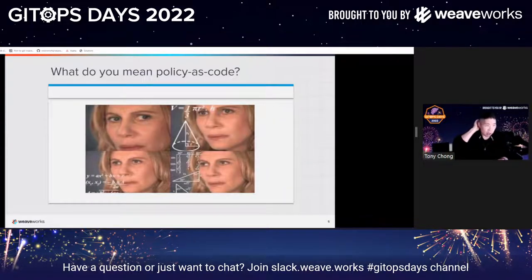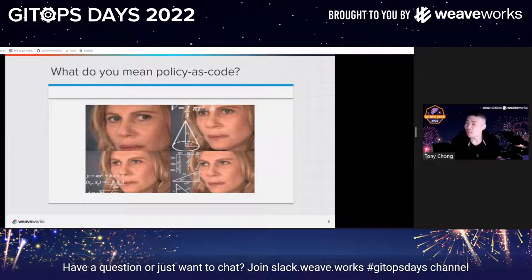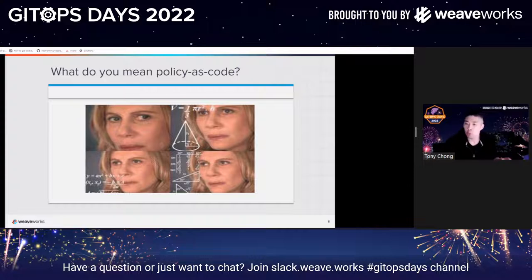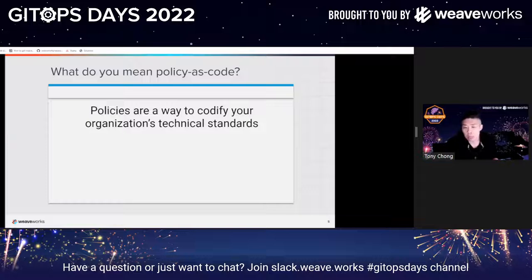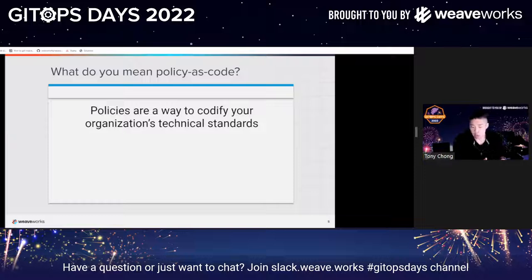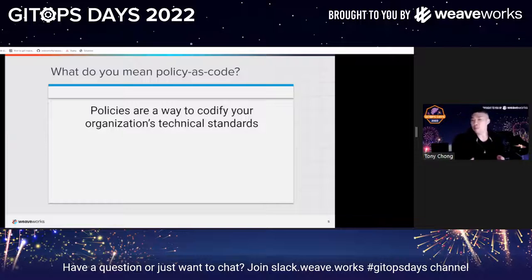What do I mean by policy as code? Policy as code is simply a way to codify your organization's technical standards. For example, in your organization all deployments to production require a replica count of two or greater — you can write a policy to enforce that. You can also have another policy that says clusters named US-East-something require a minimum of three replicas. You can write a policy for that too.